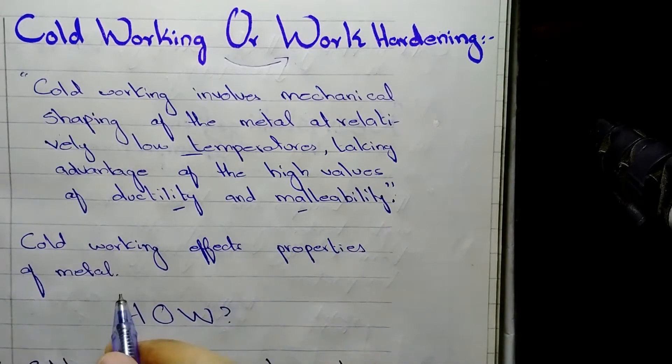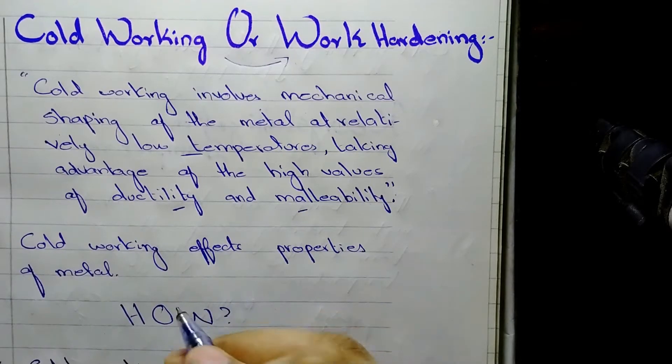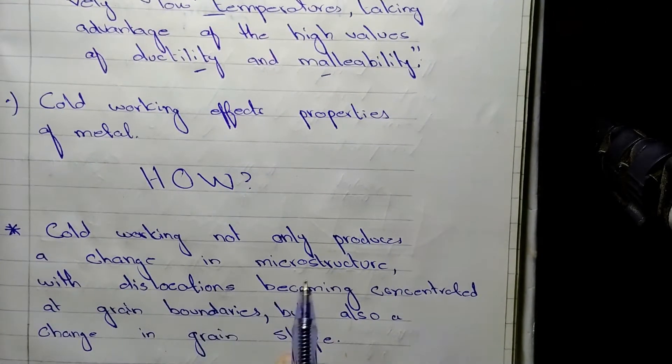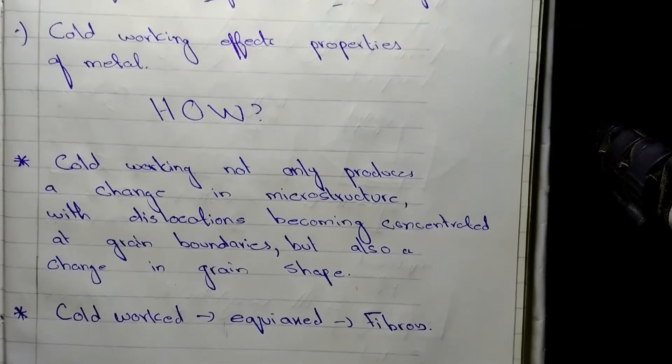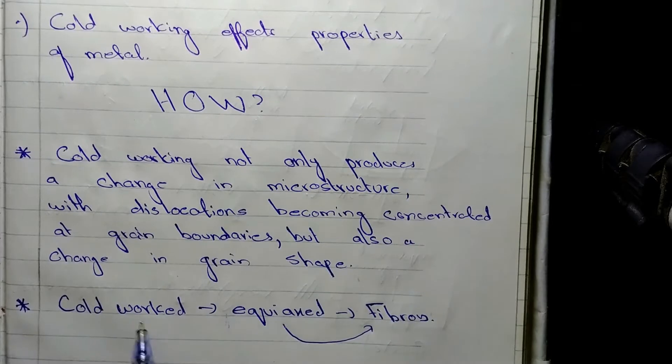Cold working affects properties of metals. Yes, cold working can affect properties of metal, but how? Cold working not only produces a change in microstructure with dislocations becoming concentrated at grain boundaries, but also change in grain shape. So as there is a change in grain shape from equiaxed to fibrous as we cold work the metal, the equiaxed structure of grain becomes fibrous.